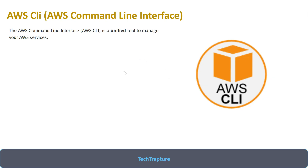AWS CLI or command line interface is a unified tool to manage your AWS services. Whenever you are working with AWS — creating an EC2 instance or creating an S3 bucket — all these things you normally do through the console. Instead of doing that, you can use the CLI: with just a few commands you can create your EC2 instance or your S3 bucket. CLI is a single CLI for all AWS services.